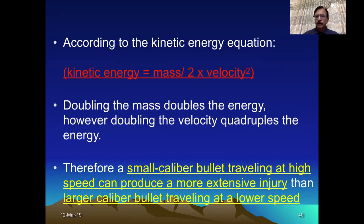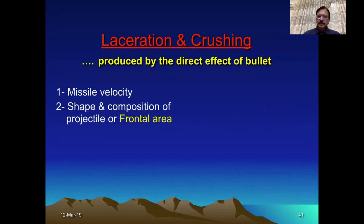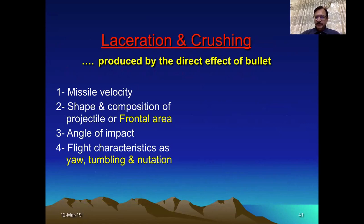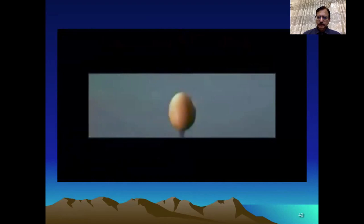Among firearm weapons, the high velocity weapon produces more lethal and damaging effects than the low velocity weapon. Laceration and crushing are caused by the missile velocity, the shape and composition of the projectile, the area it strikes, the angle of impact, and flight characteristics. If the bullet is showing an atypical flight pattern, this may change the appearance of the laceration and crushing. A fragmented bullet will produce multiple entry wounds.